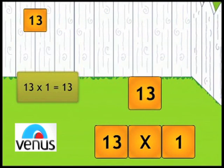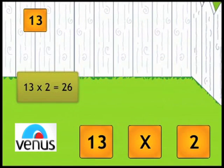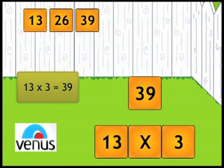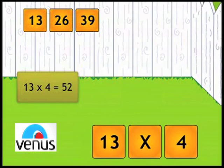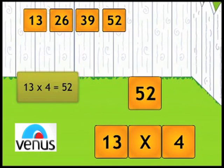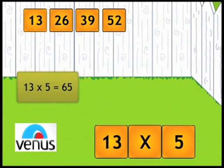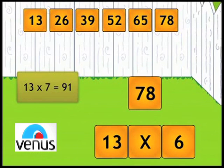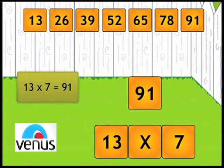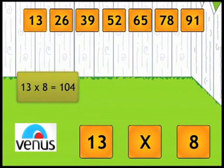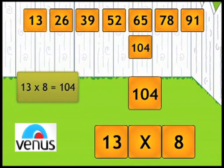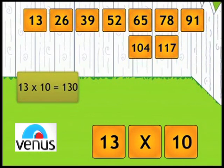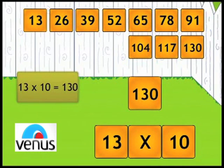Thirteen 1's are 13. Thirteen 2's are 26. Thirteen 3's are 39. Thirteen 4's are 52. Thirteen 5's are 65. Thirteen 6's are 78. Thirteen 7's are 91. Thirteen 8's are 104. Thirteen 9's are 117. Thirteen 10's are 130.